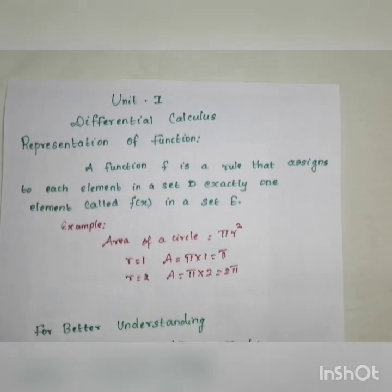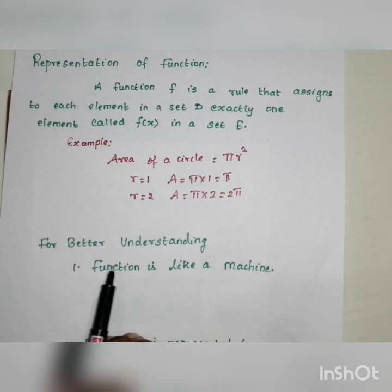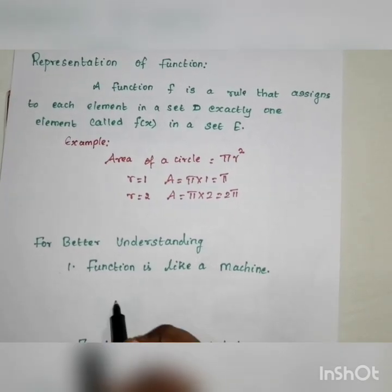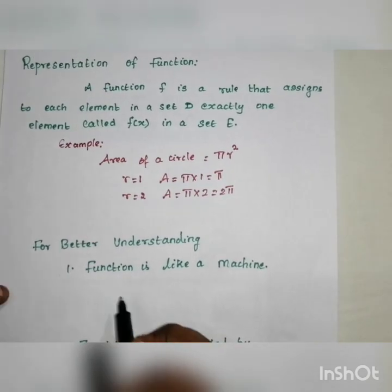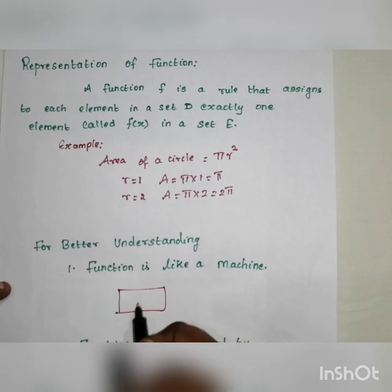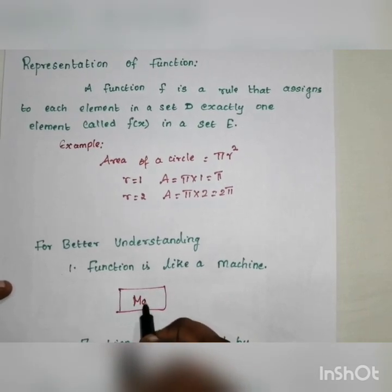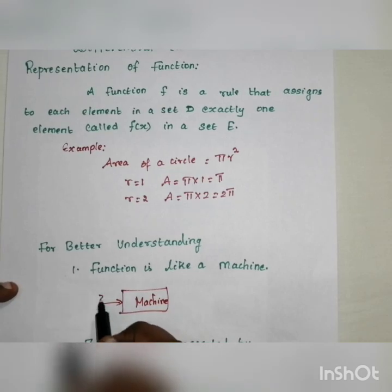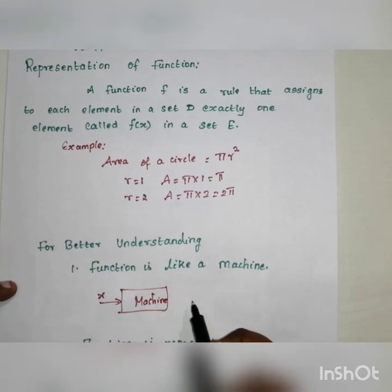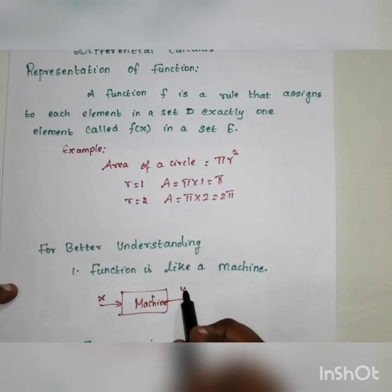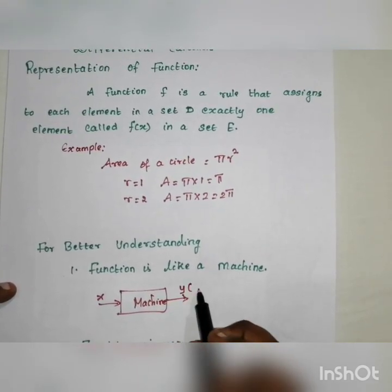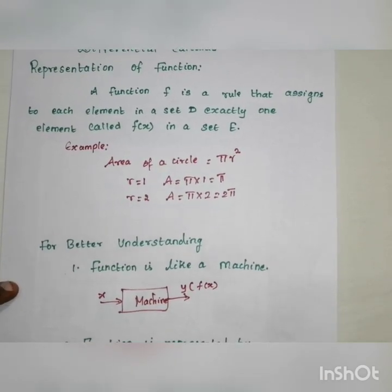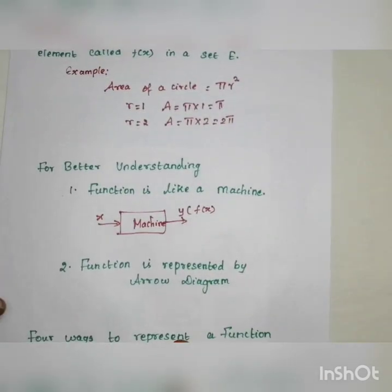We can explain that a function is like a machine. A machine takes an input xₙ and produces an output yₙ, which is f(xₙ). This helps us better understand the function.